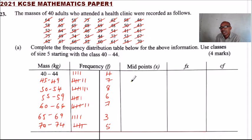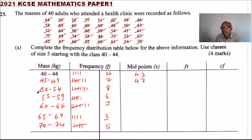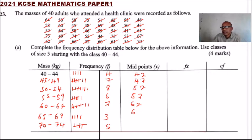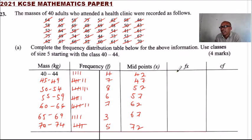The midpoint of 40 to 44 is 42. We have 47 for 45 to 49. Then we have 52 for 50 to 54. We have 57 for 55 to 59. We have 62 for 60 to 64. We have 67 for 65 to 69. And finally we have 72 for 70 to 74.